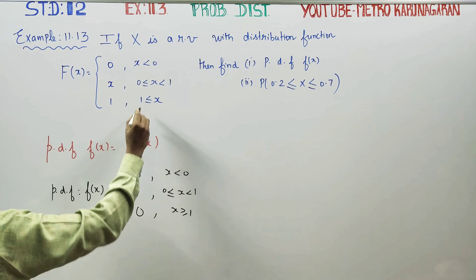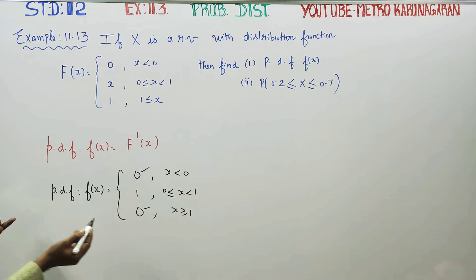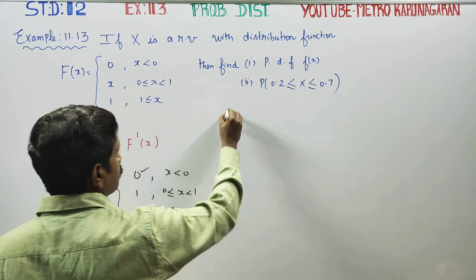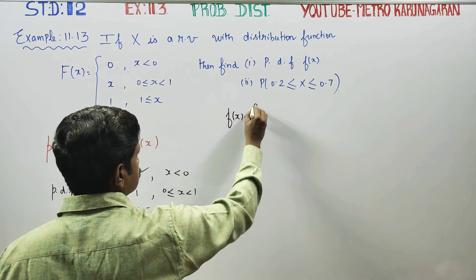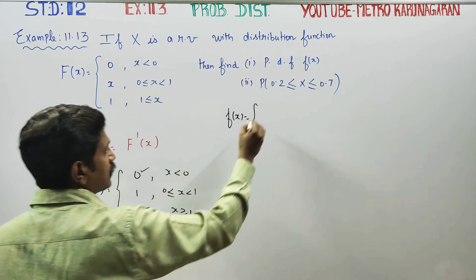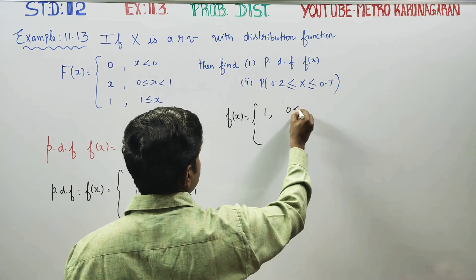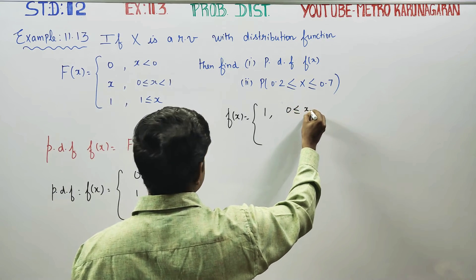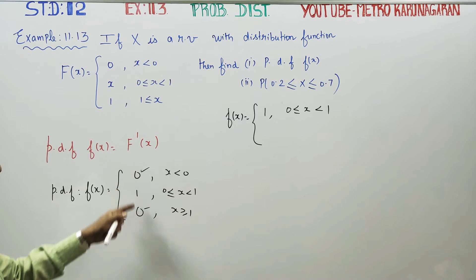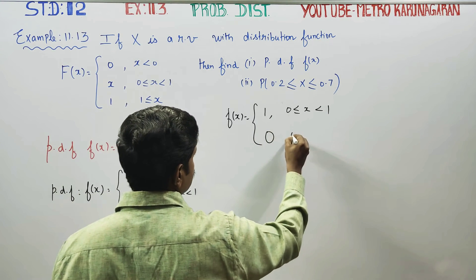Differentiating 1 gives 0, with the condition x is greater than or equal to 1. So f(x) = 1 for 0 ≤ x < 1, and 0 otherwise.